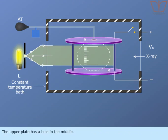The upper plate has a hole in the middle. Insulating rods of glass or ebonite hold the plates in position.